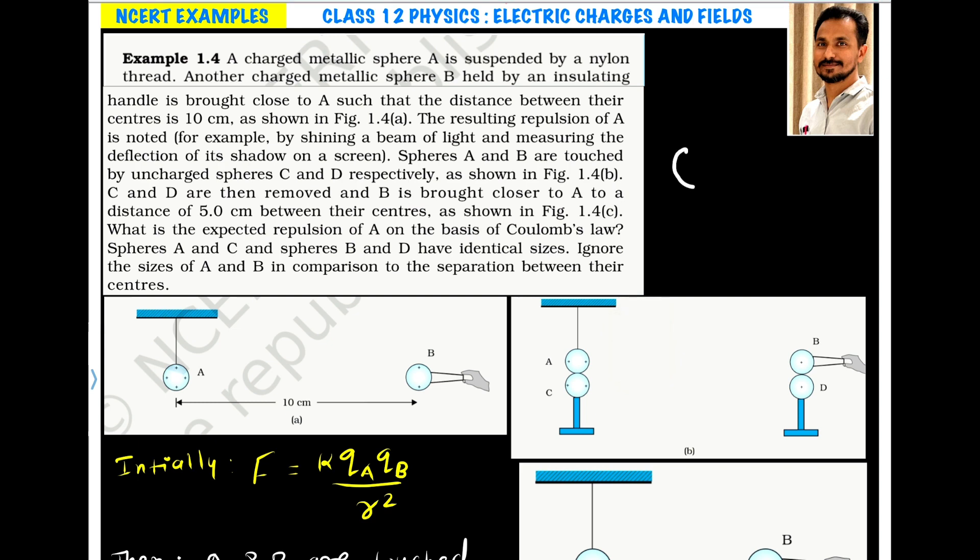What will happen? If sphere A has charge Q and you have another identical sphere C that is uncharged, and you bring them in contact, the charge from A will transfer to C until the charge on both spheres becomes equal. The total charge Q will divide among these two spheres and become Q by 2, Q by 2.